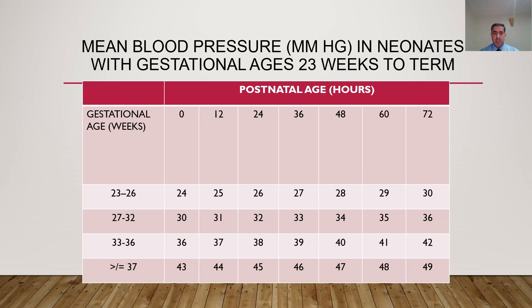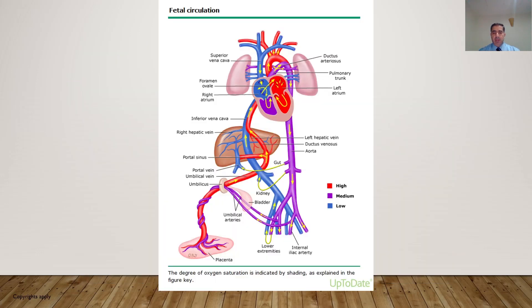Now we will talk about fetal circulation, a very important subject to understand why hypotension occurs in some babies. Normally, the placenta sends oxygenated blood to the umbilical vein, which goes to the inferior vena cava, passing through the ductus venosus and liver before joining the inferior vena cava.